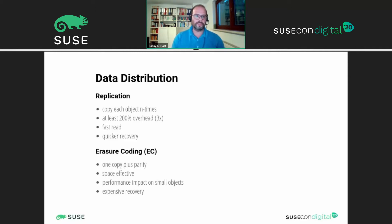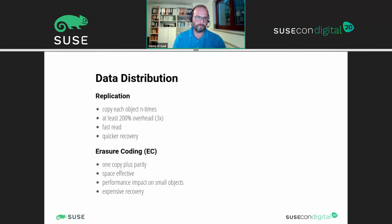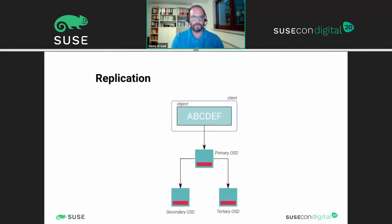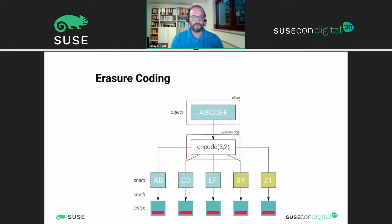The other solution you can choose is erasure coding, which is basically one copy plus parity — comparable to what's used in RAID systems. It's very space-efficient; you need less space than with replication. But there's a performance impact on small objects and the recovery process is very expensive in terms of time and compute power. With erasure coding, the object is cut into n pieces and k codes are used to recover from there if an OSD is lost, giving you less than the 200% overhead.